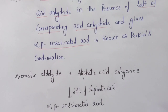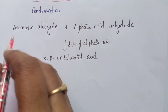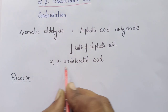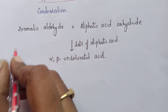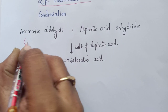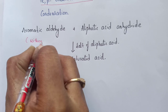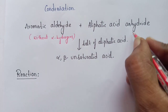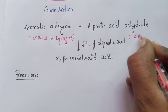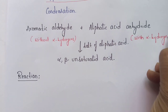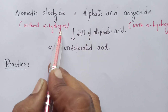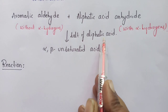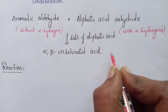In simplified form: aromatic aldehyde reacts with aliphatic acid anhydride in the presence of the salt of aliphatic acid to give an alpha-beta unsaturated acid. An important point: the aromatic aldehyde must not possess any alpha hydrogens, while the aliphatic acid anhydride must possess alpha hydrogens.